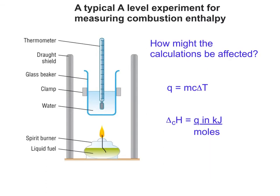So these are the two calculations that we use, and what we've got to think about is what are the different things that could be affected. I've listed all the different individual components of each calculation on the right-hand side in red, and we're going to go through a series of possible scenarios that might affect one or more of those.